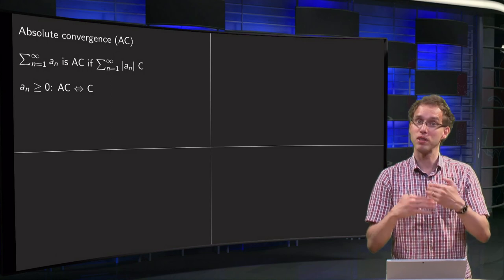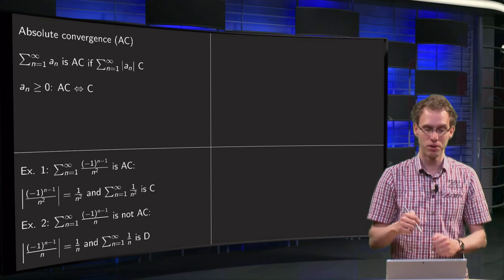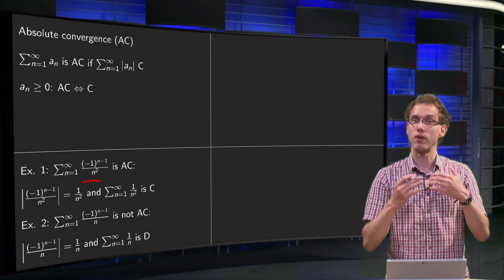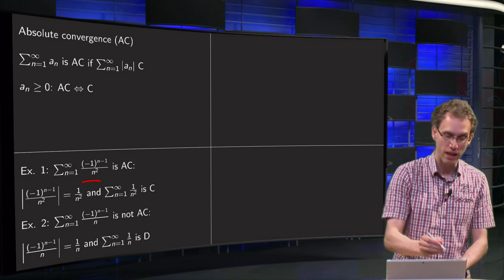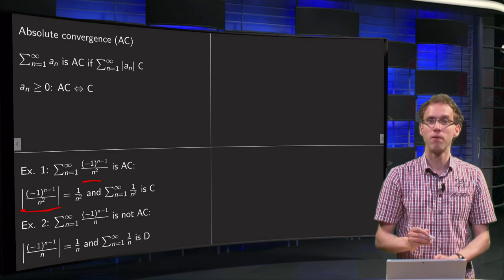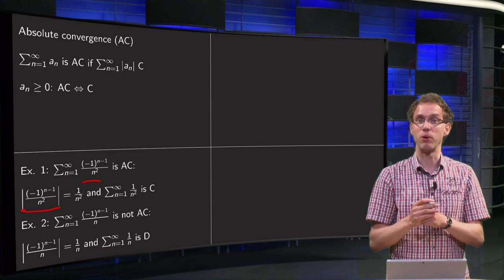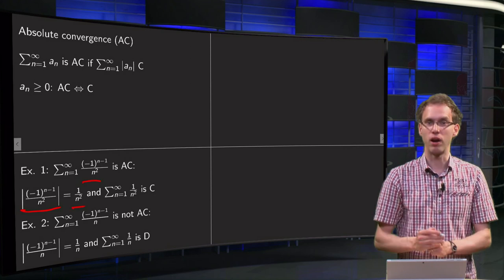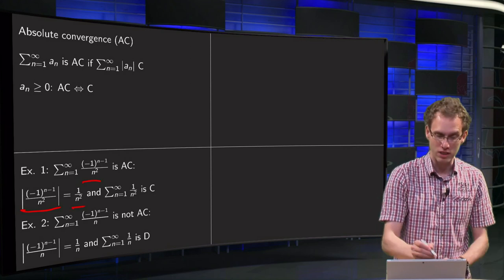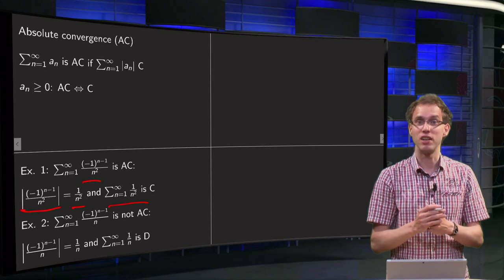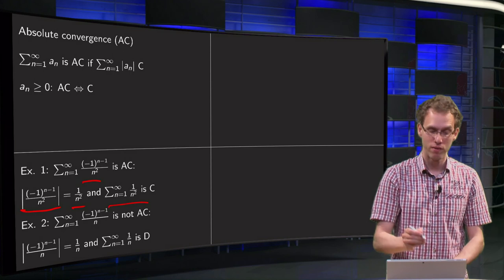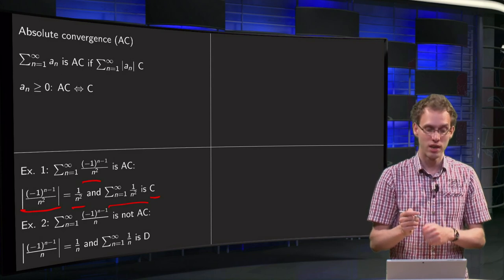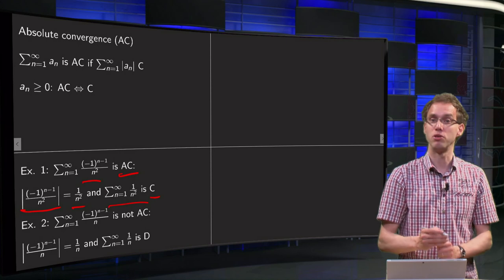Let's look at what happens if we have positive and negative terms. Suppose we have terms of (-1)^(n-1) divided by n². To check absolute convergence, we take the absolute value of the terms. Since n² is always positive and |(-1)^(n-1)| equals 1, the terms become 1/n². This is a p-series with p=2, which is greater than 1, so it is convergent. Therefore our original series is absolutely convergent.